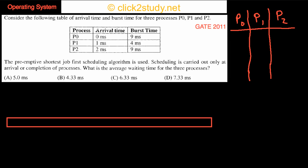Let us start the next problem. Consider the following table of arrival time and burst time for three processes P0, P1, and P2. There are these three processes with arrival times 0, 1, and 2, and the burst time, the CPU time they need, is 9, 4, and 9.